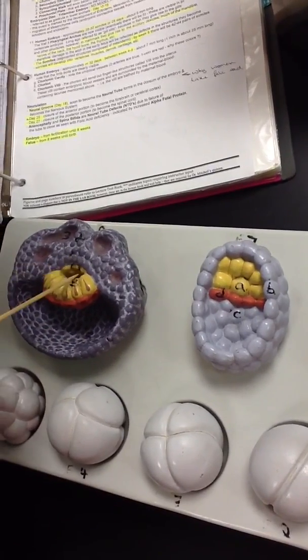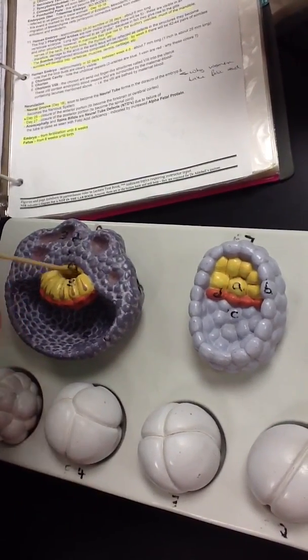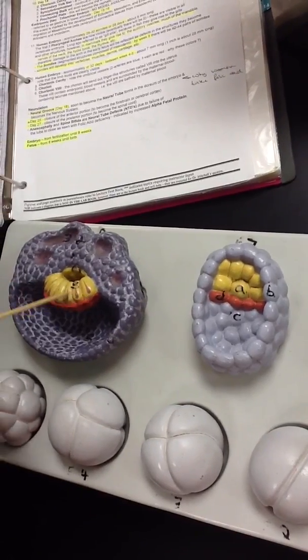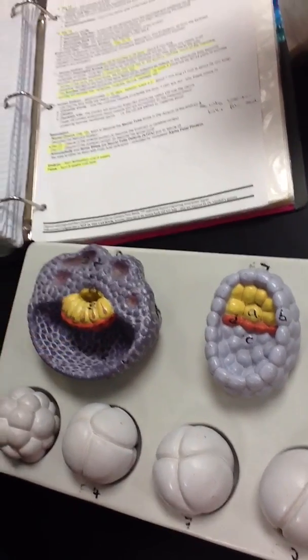And then we have the amnion, which is this roof, and then this space is the amniotic cavity. We also have the epiblast here and the hypoblast.